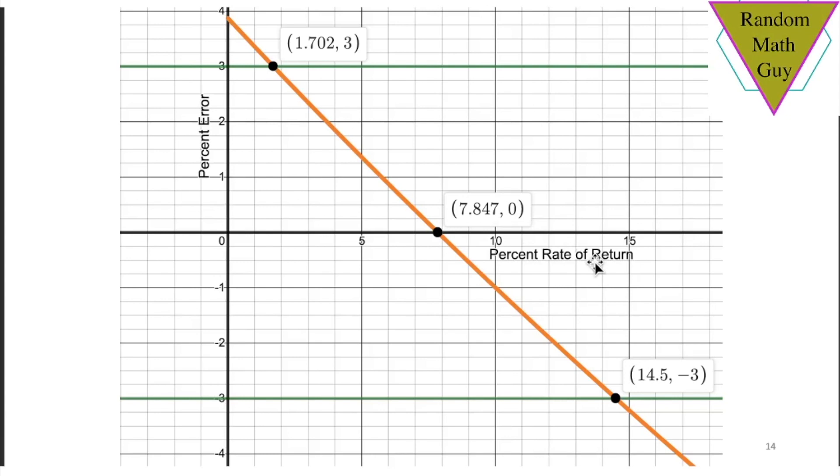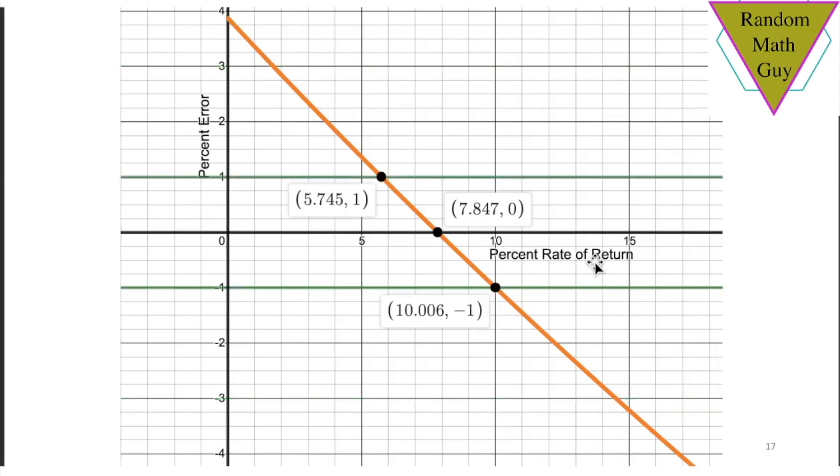We can tighten up further. Perhaps you want within 1% what rate of return is accurate. Here you go. So between a rate of return of 5.7 and 10.0% approximately, the percent error for your estimated doubling time is between plus and minus 1%. Pretty good.